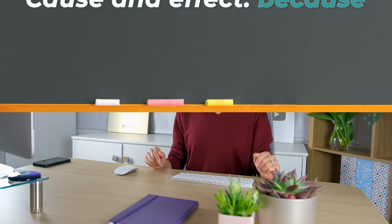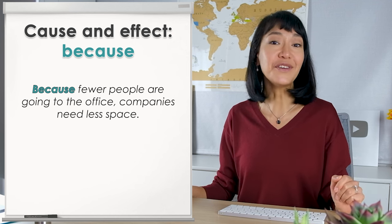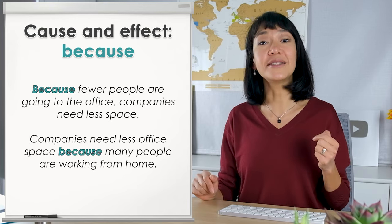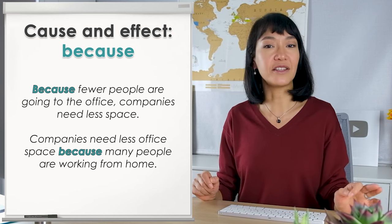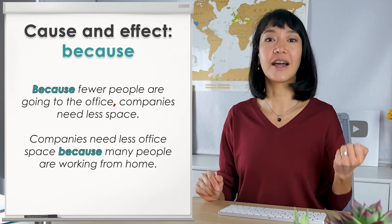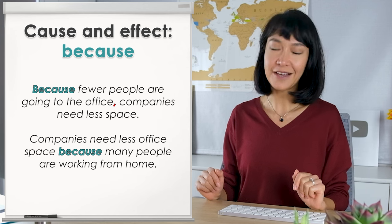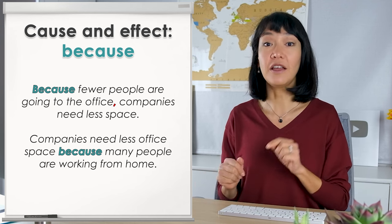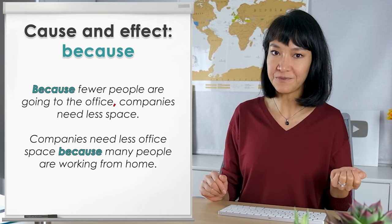Next, we are always looking to explain something — answering the question 'why'. And probably the most effective linker here is 'because'. 'Because fewer people are going to the office, companies need less space.' We could put this information the other way around: 'Companies need less office space because many people are working from home.' In the first sentence, the dependent clause with 'because' comes first, so we must separate it from the main clause with a comma. In the second, we don't need a comma. If 'because' is at the very beginning, you need a comma in the middle. If 'because' is in the middle, you don't need a comma.